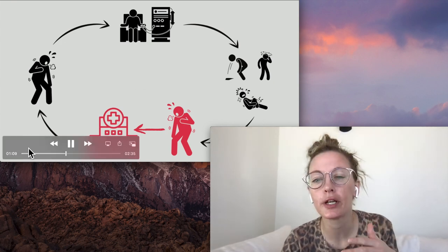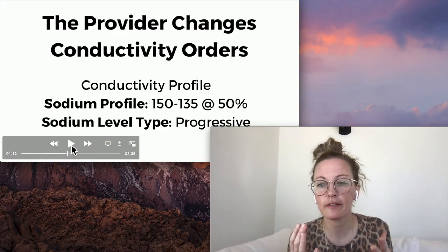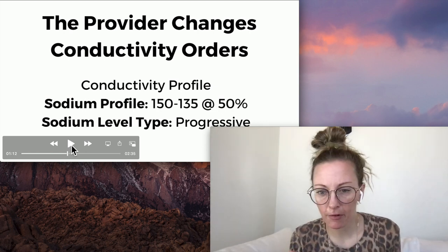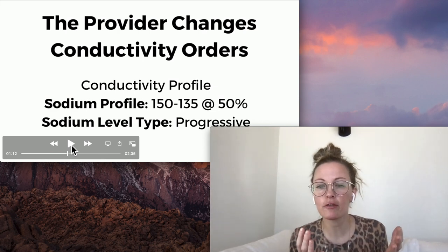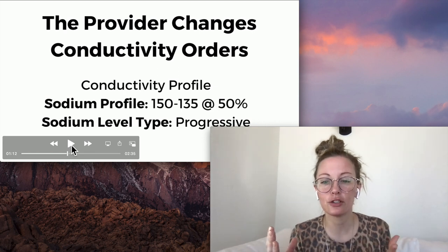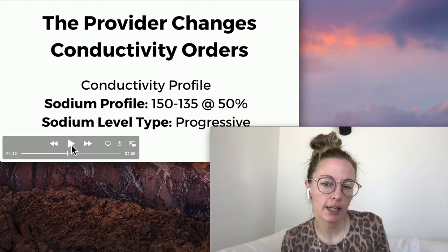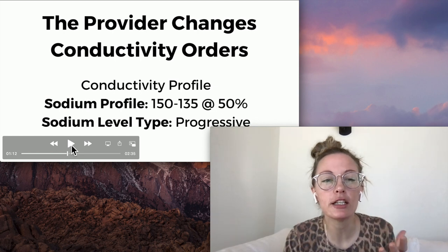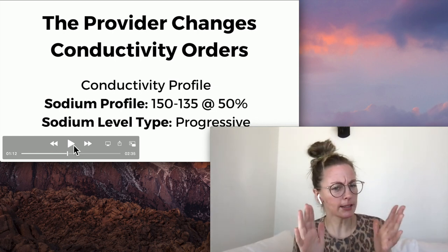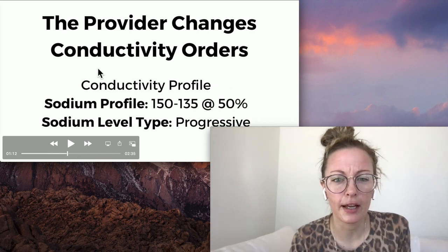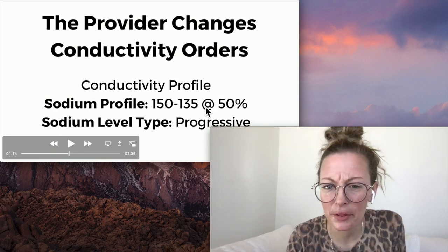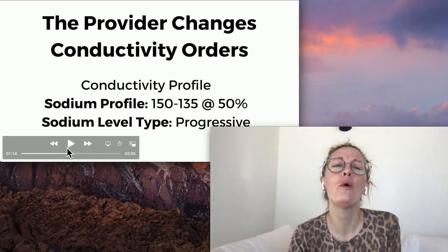Whatever we're doing isn't working and we need to try other things. Sometimes facilities do longer or extra treatments, but for some patients the answer is conductivity profiles. You talk to your provider: the patient has been hospitalized twice in the last 60 days, won't come in for an extra treatment — and the provider says let's try a conductivity profile. The order in your EMR might look like: 150 to 135 at 50% progressive. What does that mean?